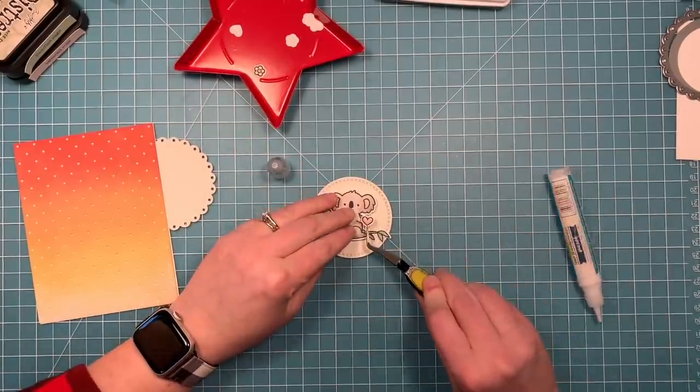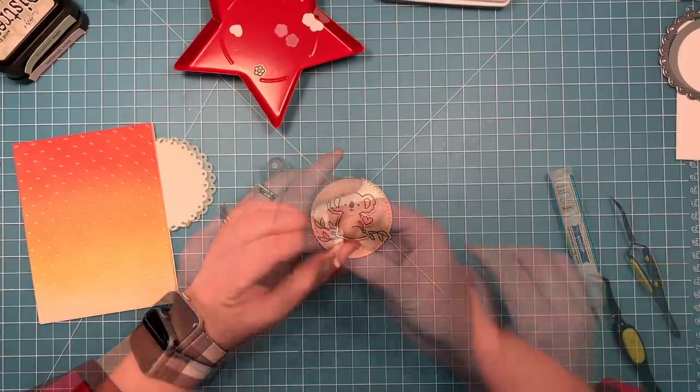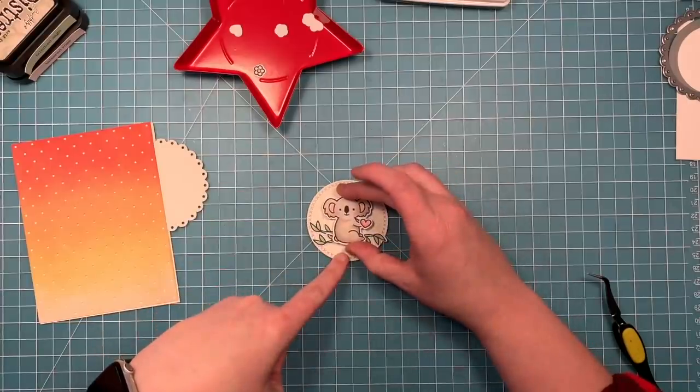Once I have these where I want them then I'll stick down my koala bear. I'm adding the little heart to his hand with the same liquid glue. I've got some foam adhesive on the back of the koala so he pops up from the circle in the background.